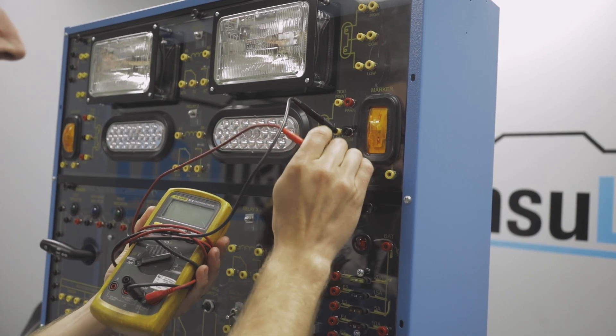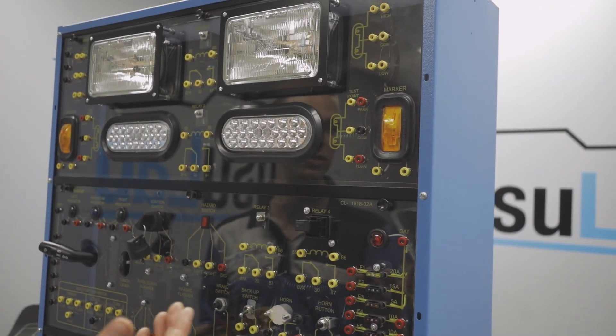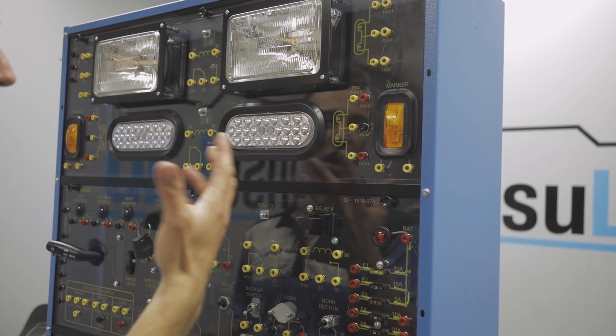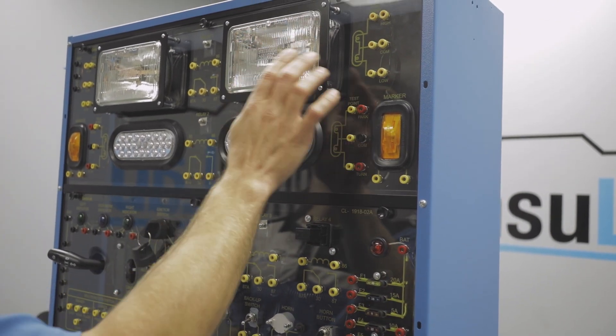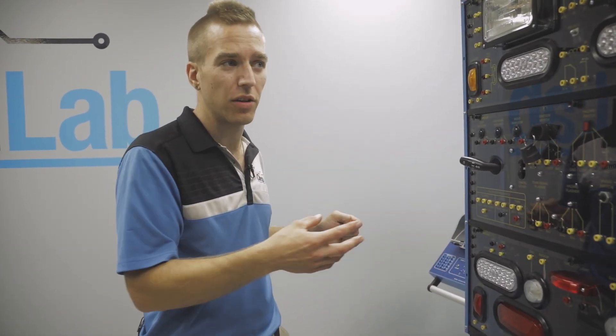This allows us to insert faults and have faults that the students can find. If there was a high resistance, let's say in a headlight on the common side, you'd be able to find the voltage drop between these two terminals. This product is available single-sided as you see here and also double-sided.